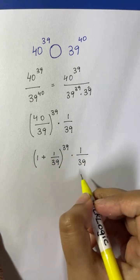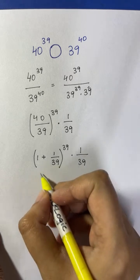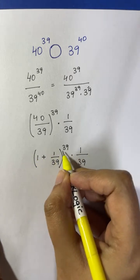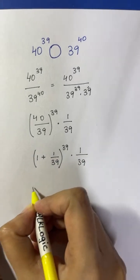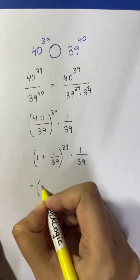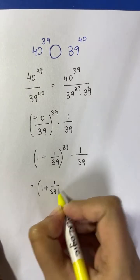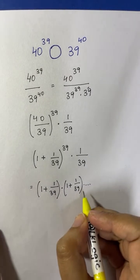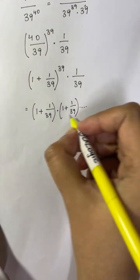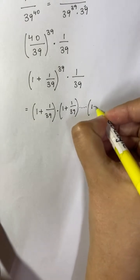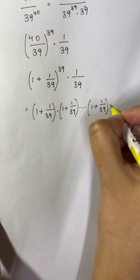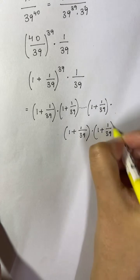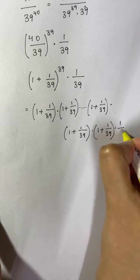So now this also looks complicated, but don't be upset. We are going to consider only this part first. This part has an exponent of 39. So we're going to write it as (1 + 1/39) times (1 + 1/39) and so on, like this 39 times. At the end you have 1 over 39 times (1 + 1/39) times (1 + 1/39) and so on, 39 times.